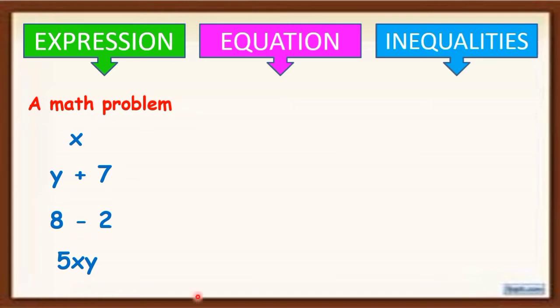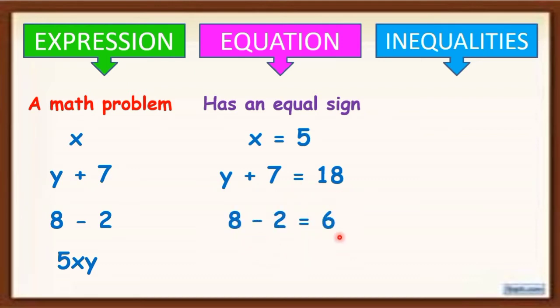When we say equation, it has an equal sign. Example is x is equal to 5, y plus 7 is equal to 18, 8 minus 2 is equal to 6, 5xy is equal to 40.